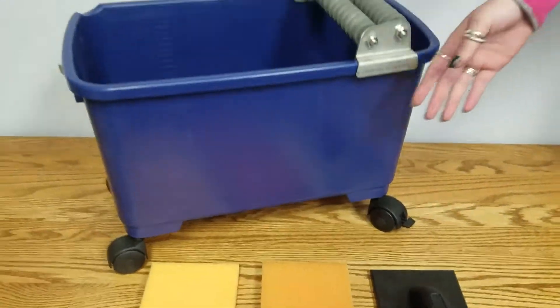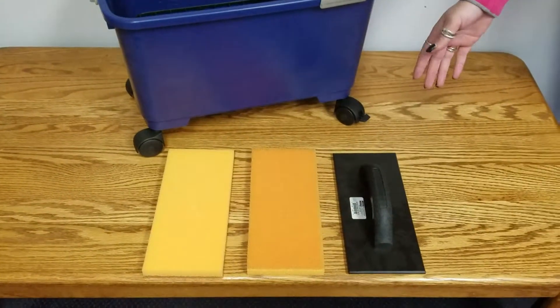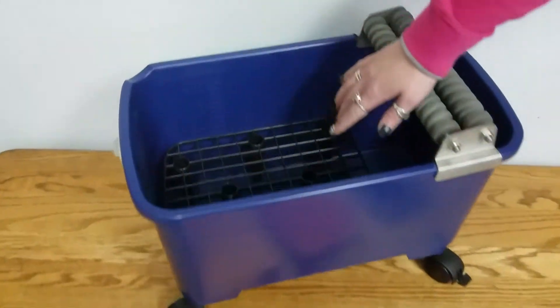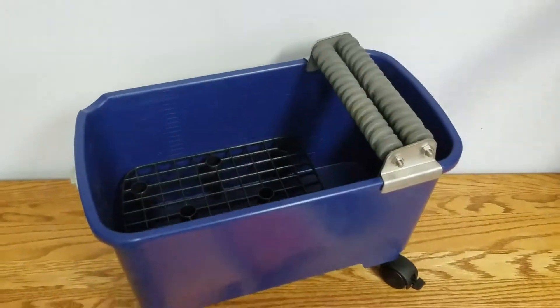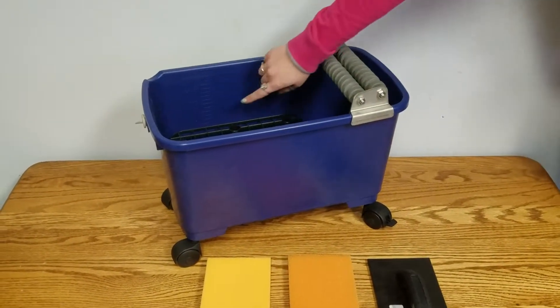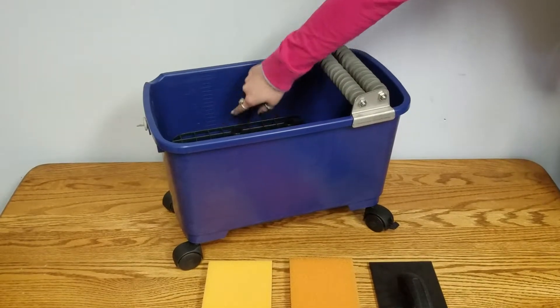With the grout cleaning system, you will get the tub, two sponges and one sponge handle, two regular casters and two locking casters, a rinse grate and a roller frame assembly. You are going to fill the tub with clean water to about three-fourths inches above the rinse grate.